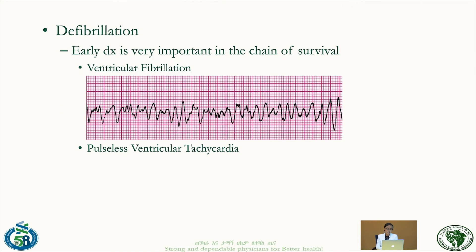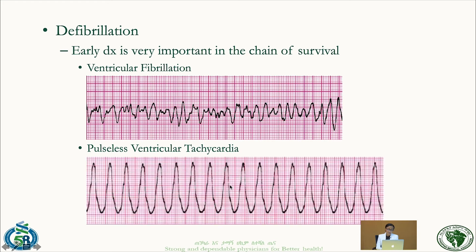Regarding defibrillation: there are four arrest rhythms. Pulseless electrical activity (PEA) looks like a normal rhythm but has no pulse. Asystole — the flat line — has no electrical activity. Ventricular fibrillation and pulseless ventricular tachycardia show wide-complex ventricular rhythms with no pulse. Only VFib and pulseless VT are shockable. Fine ventricular fibrillation should also be recognized and defibrillated.